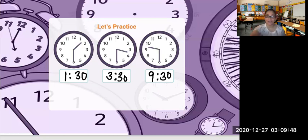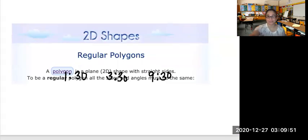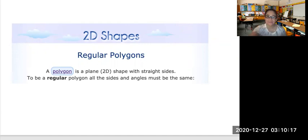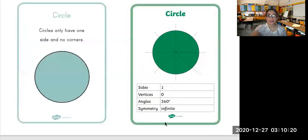Now let's go on and look at our 2D shapes. What are 2D shapes? An example of 2D shapes are regular polygons. A polygon is a plain 2D shape with straight sides. To be a regular polygon, all the sides and angles must be the same. Another way to look at 2D shapes is to remember that 2D shapes are flat. An example of a 2D shape is a circle. A circle has one side and no corners — the side of the circle is the curved side.